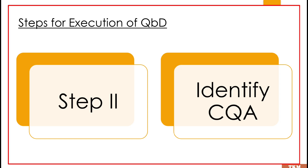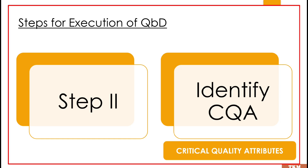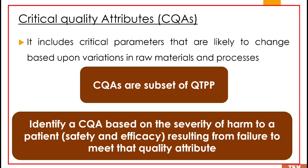Coming to step 2 of the QBD approach: identifying CQA — critical quality attributes. Once we are done framing the QTPP, the second step involves identifying the important quality characteristics of the drug product which can be useful in regulating consistency in product quality. CQAs are nothing but a subset of QTPP. We identify a CQA based on the severity of harm to a patient and patient safety and efficacy resulting from failure to meet the quality attribute.